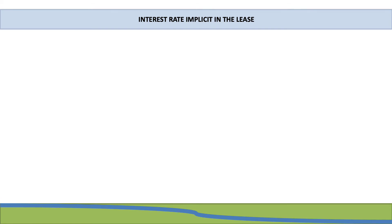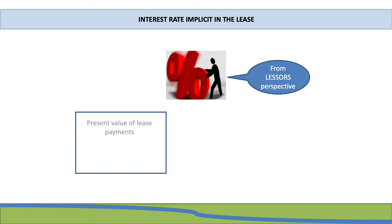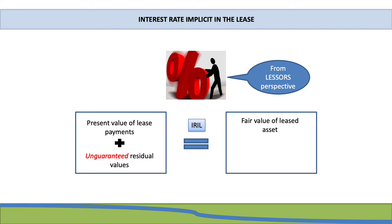When calculating the lease liability, the lease payments must be discounted using the interest rate implicit in the lease. When calculating the interest rate implicit in the lease, it is important to note that it will be from the lessor's perspective. So even though you are accounting for the lease in terms of the lessee, when it comes to the interest rate implicit in the lease, you need to look at everything that affects the lessor. The interest rate implicit in the lease is the rate at which the present value of the lease payments plus the unguaranteed residual value will be equal to the fair value of the leased asset plus the initial direct cost of the lessor.